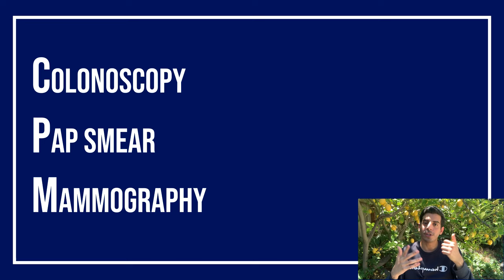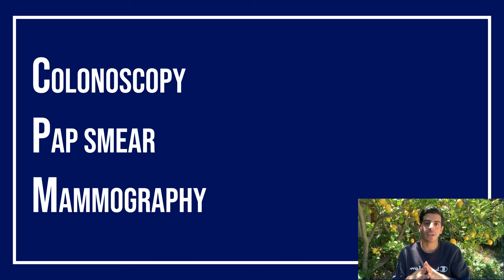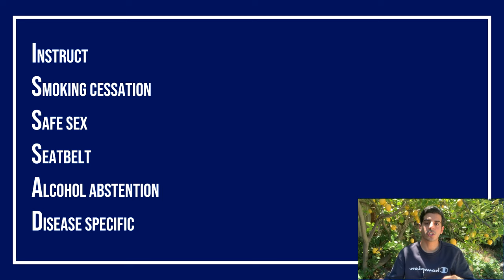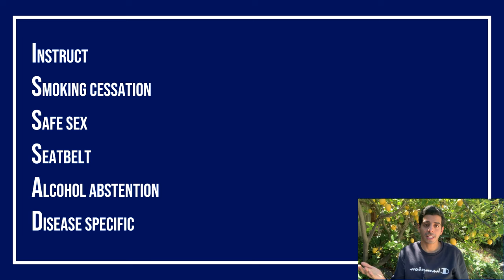CPM is your screening tests: colonoscopy for ages 50–75, every 10 years; pap smear for ages 21–65, every 3 years; and mammography for ages 50–75, every 2 years. ISAD stands for instructing the patient. When you type 'instruct' in the field box it gives you many options — if they have diabetes, instruct them; if you're giving new medications, instruct on compliance and side effects. The three S's are smoking, safe sex, and seat belt. A is alcohol abstinence for excessive drinkers. D is disease-specific — for example, consulting psychiatry if the case has a psychiatric component. That's the main approach.